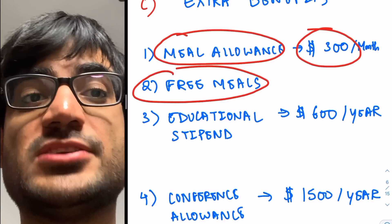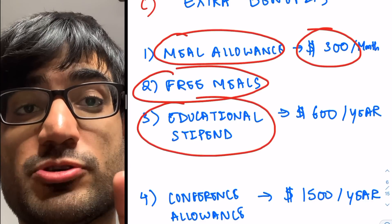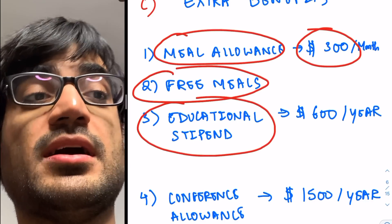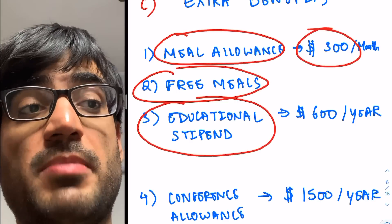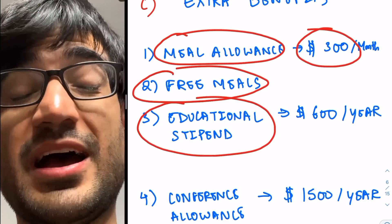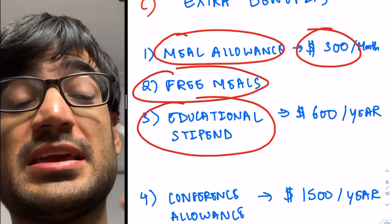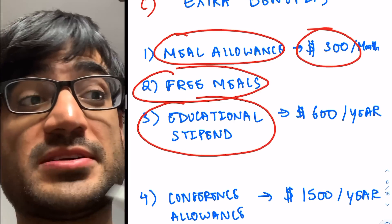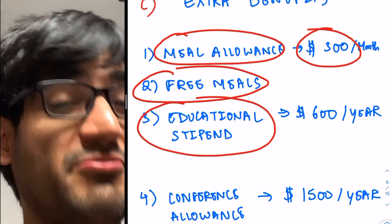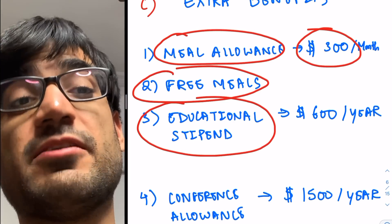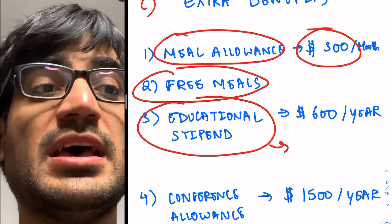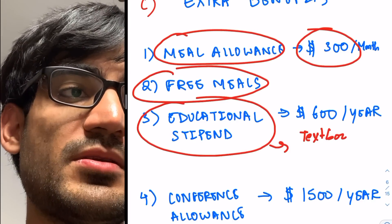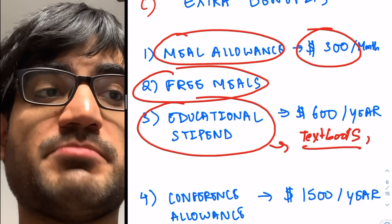Then you also get educational stipend. Not all residency programs do it, but a lot of them do. And you can get an educational stipend of about up to $600 per year. I've also seen one residency program giving an educational stipend of about $1,000 per year.